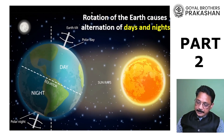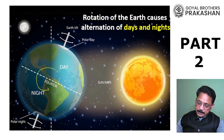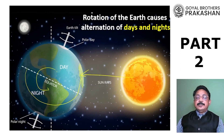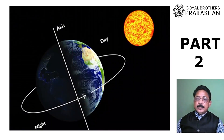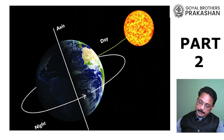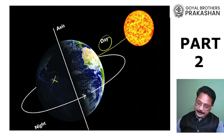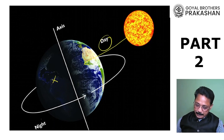Earth rotates around itself. That means after some time, this part will now come in front of the sun and it will receive more light. Therefore, there will be day, and this part will go behind, so there will be night time. The sunlight is falling on this part so there is going to be day; the sunlight won't fall here so this is going to be night. This is that tilted axis of the earth.